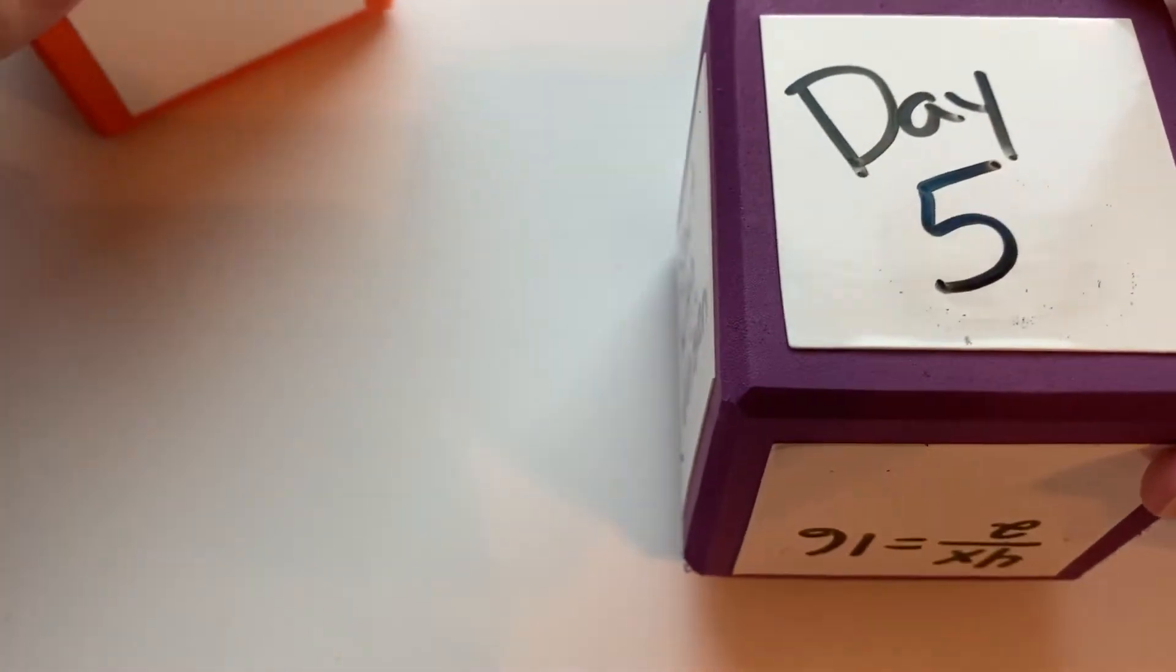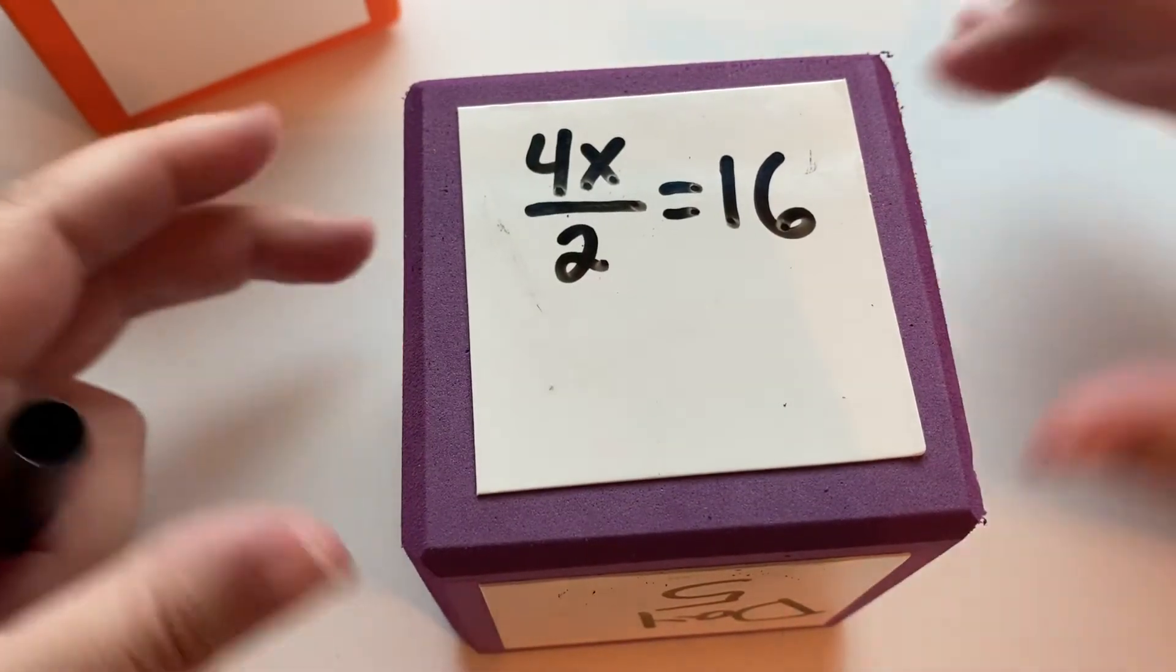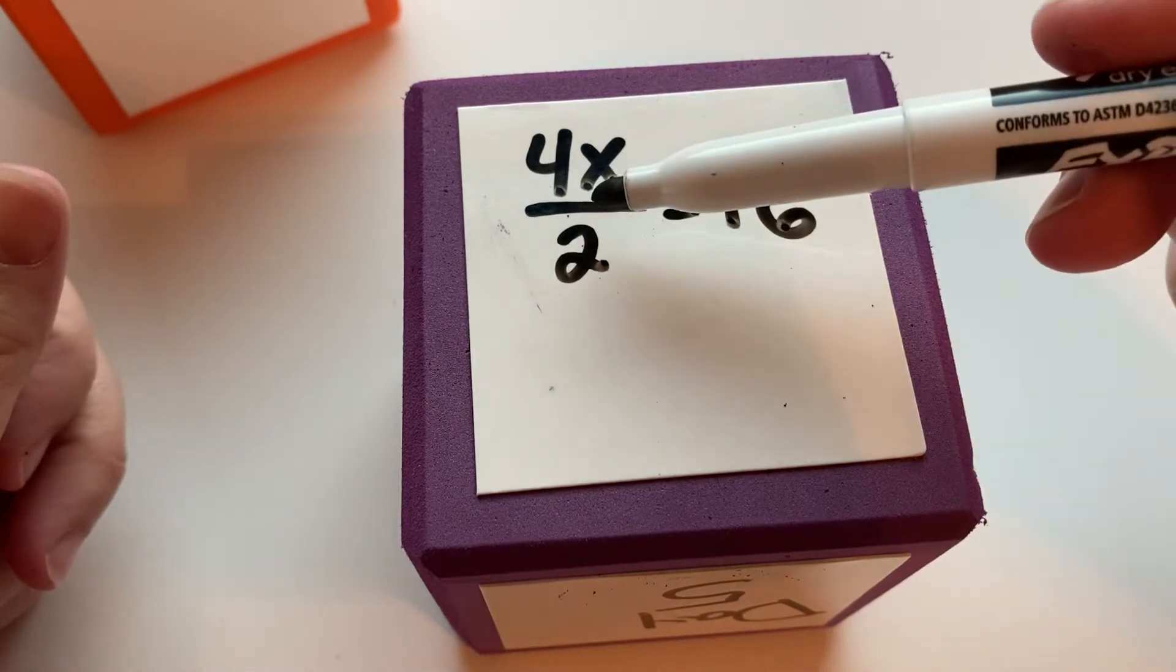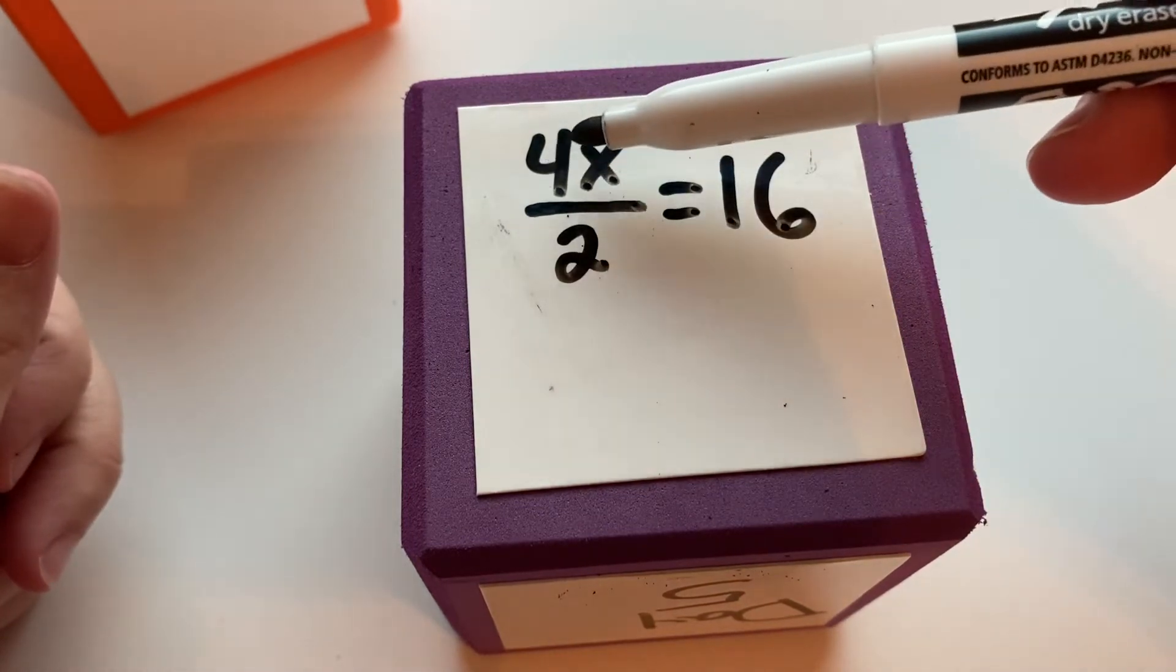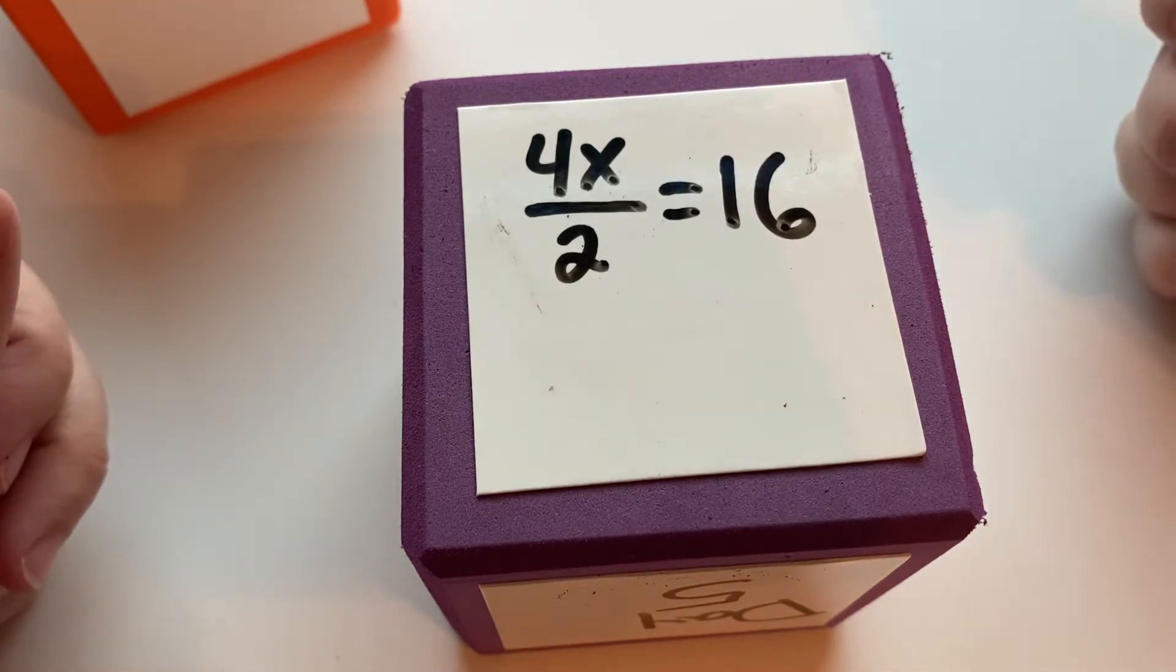So what I'm talking about is a problem that would look like this: 4x divided by 2. This means 4 times x divided by 2. You have two different operations going on.